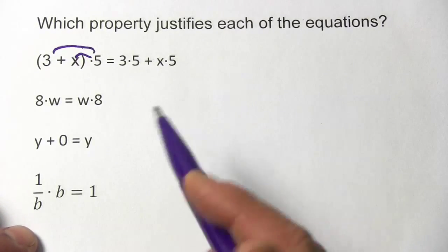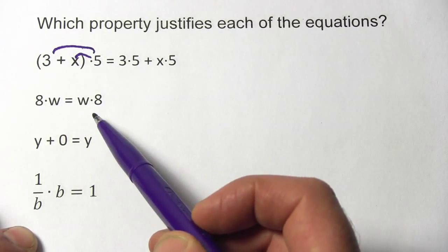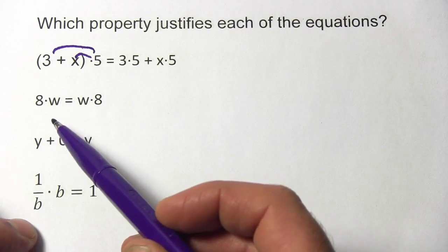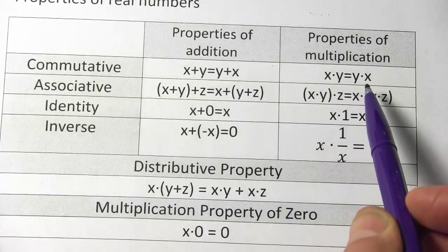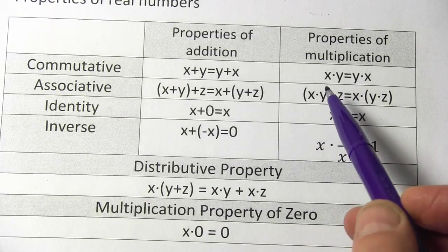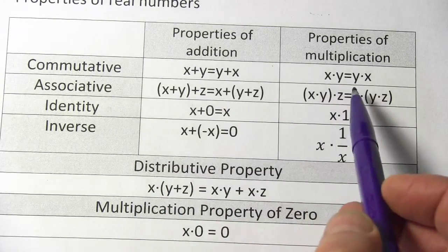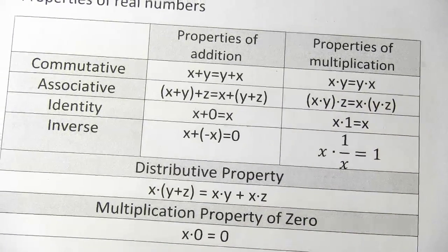Alright, let's look at this next one. We have 8 times w equals w times 8. This is multiplication, so this is going to be one of the multiplication properties. And it looks like just like this one. If you replaced x and y with the 8 and the w, you'd get this commutative property, which says it doesn't matter what order you multiply things in.